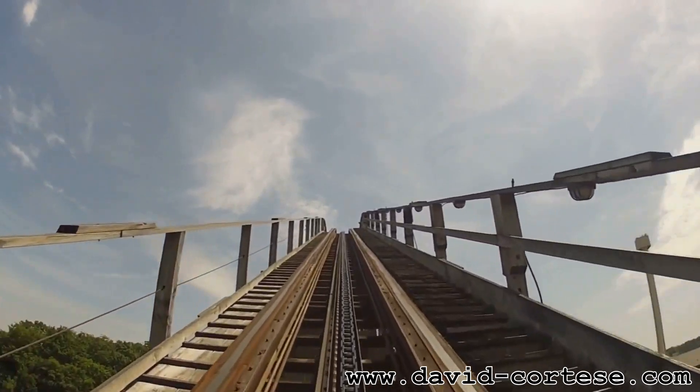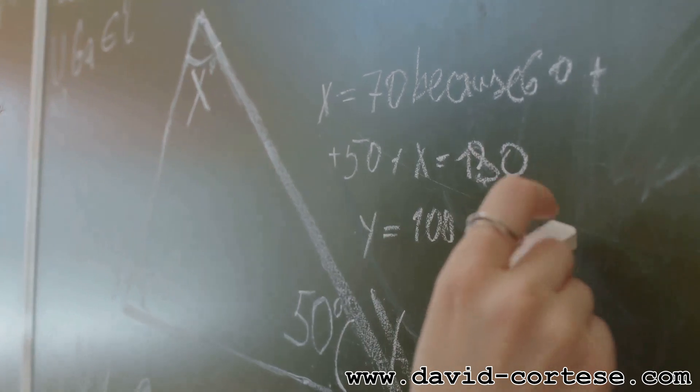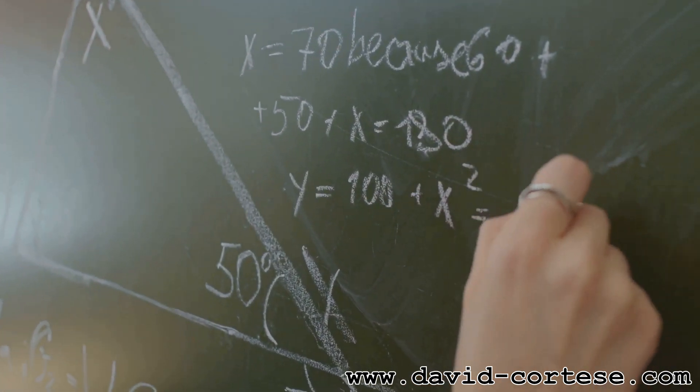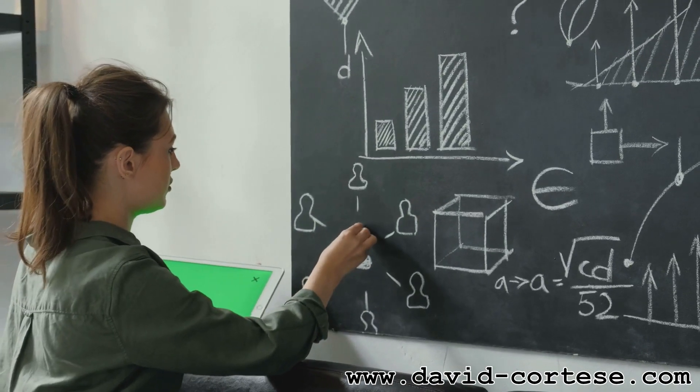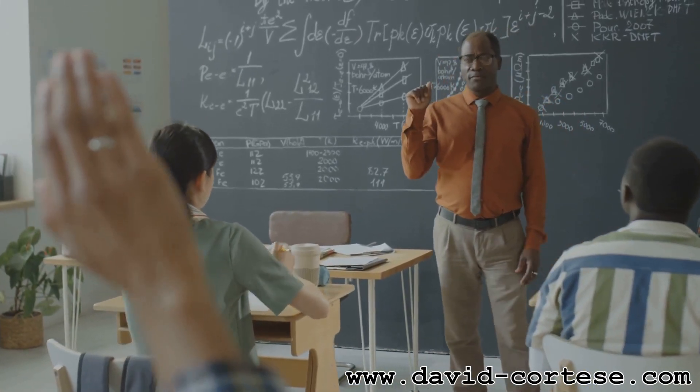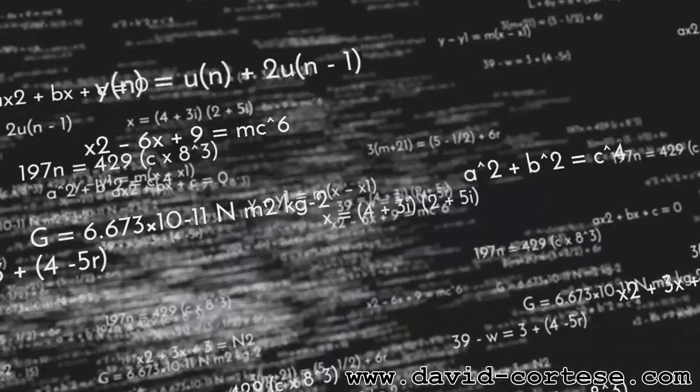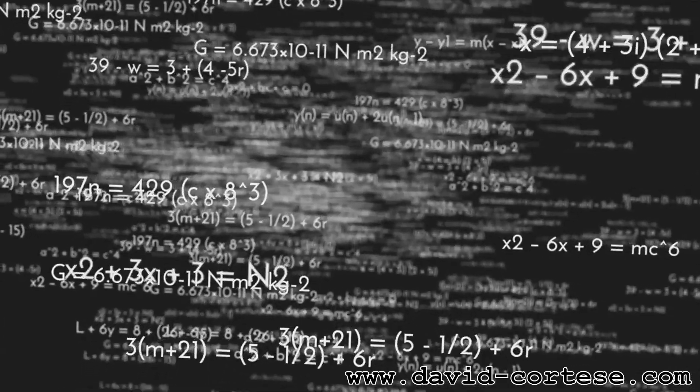Mathematically, the derivative of a function is represented by its slope at a particular point. We can find this slope by drawing a tangent line to the curve at that point. The steeper the tangent line, the greater the derivative and the faster the rate of change. Derivatives are essential for understanding a wide range of phenomena, from the motion of objects to the spread of diseases.